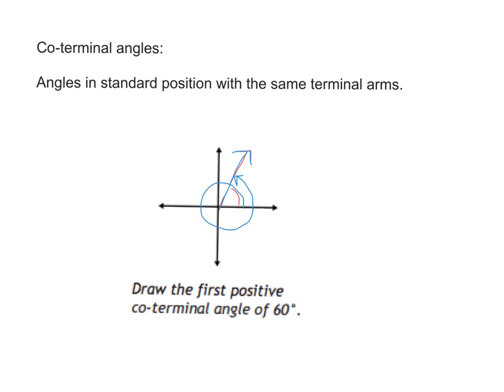And what's the measure of that angle? 420, how'd you get that? It was 360, the whole circle, plus another 60. So it's 420. That's the first positive coterminal angle of 60 degrees.